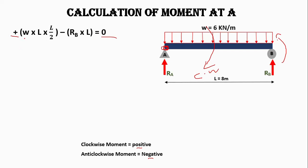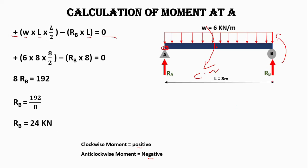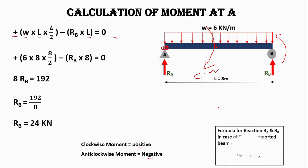W is the uniformly distributed load acting on 8 meters of length, acting from the centroid. Since we have a rectangular load, the centroid is at the center of the beam, that is L/2. The moment arm for support reaction Rb is L, which is 8 meters. After putting in the values, Rb equals 24 kilonewtons.